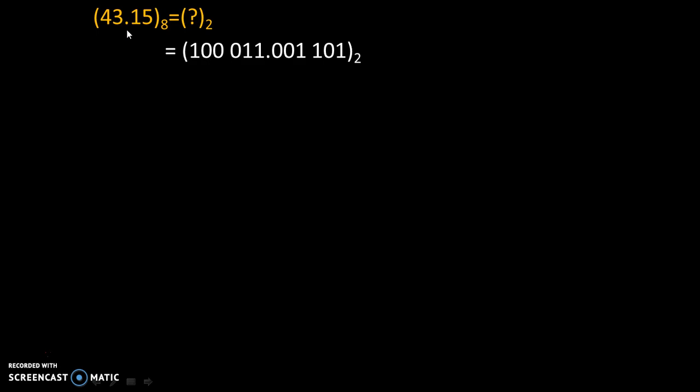Then 3. For 3, 2 and 1 are needed, 4 is not needed. That's why code will become 011. Then this fraction point will become as it is.